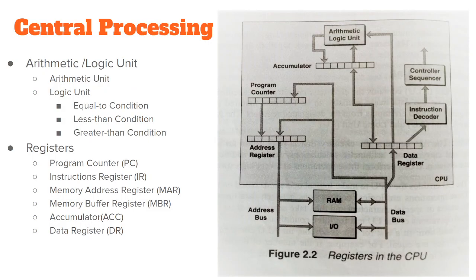The foremost part in a computer is the central processing unit. What does the CPU contain? Mainly it contains the arithmetic and logic unit. The arithmetic unit performs arithmetic calculations — mathematical calculations like addition, subtraction, multiplication, and division — at very high speed.